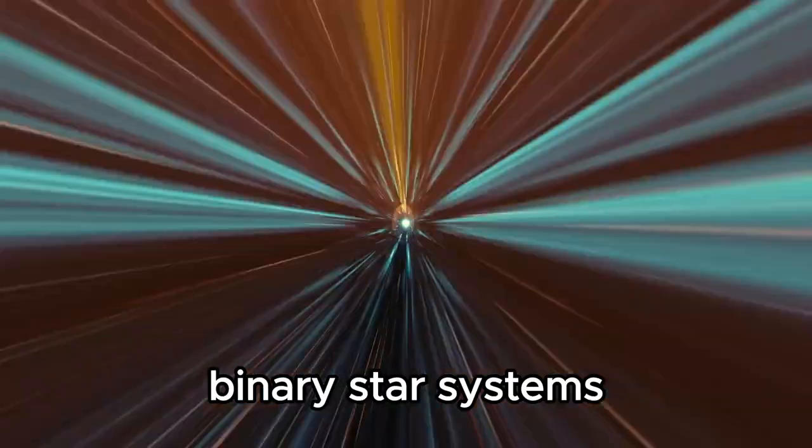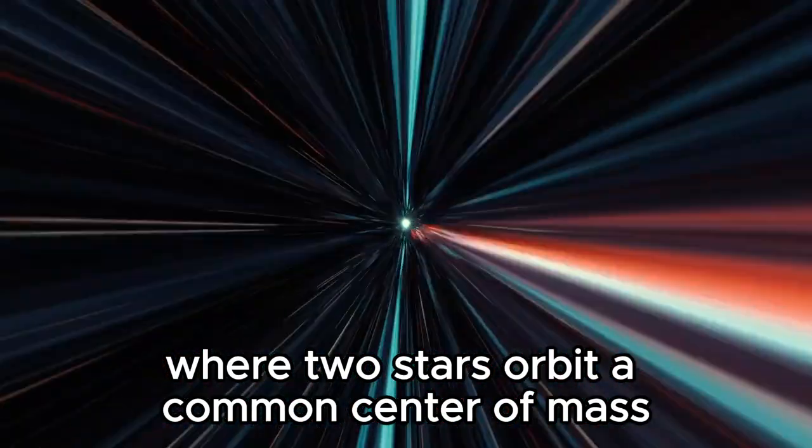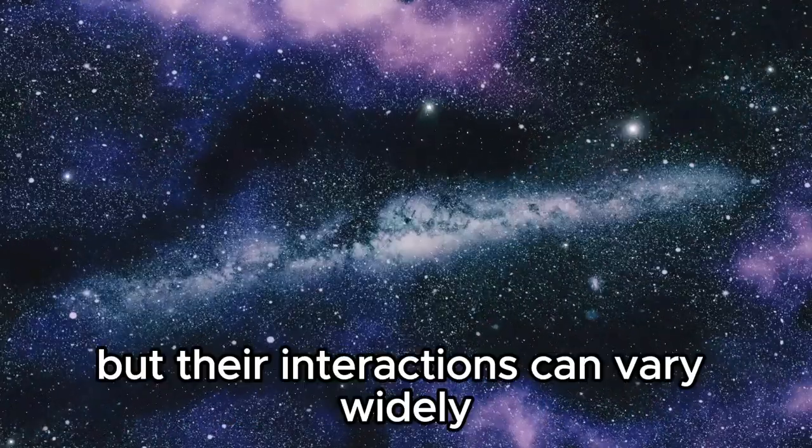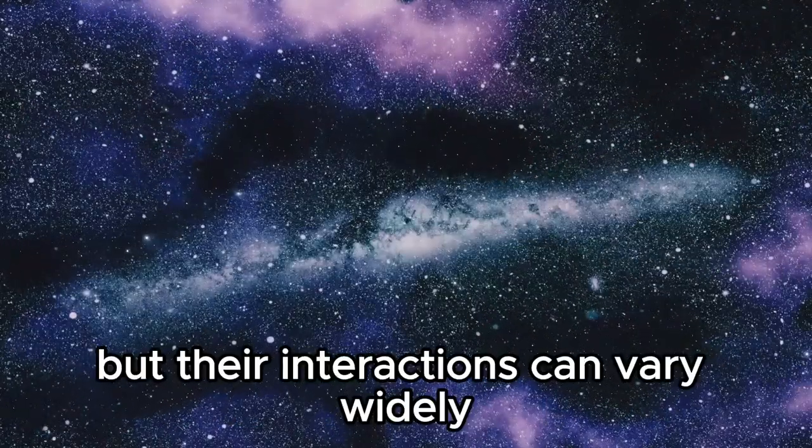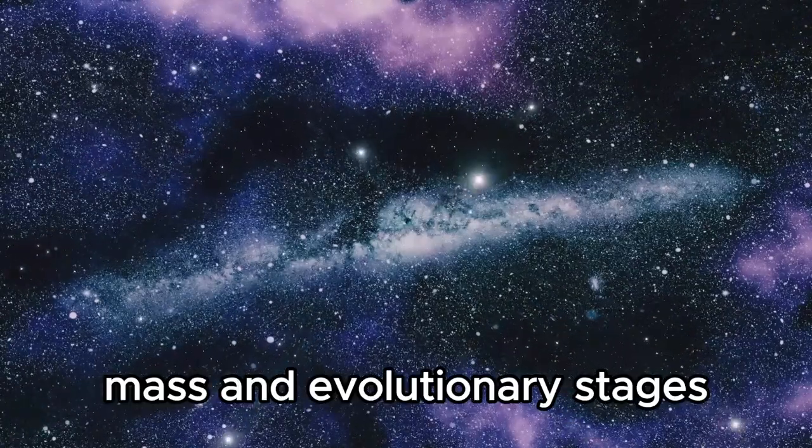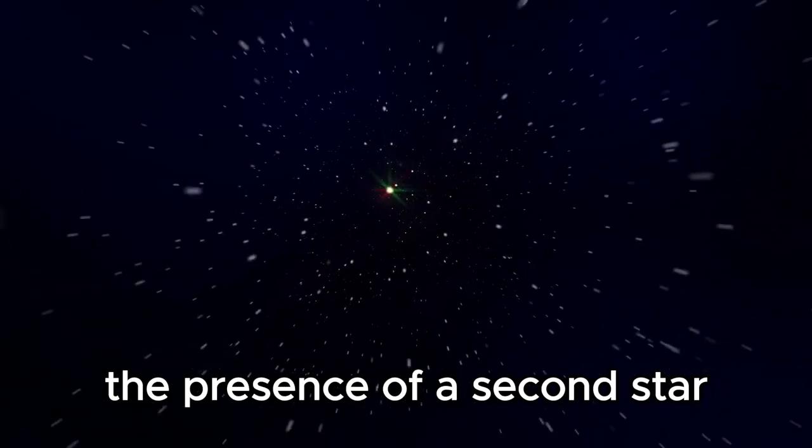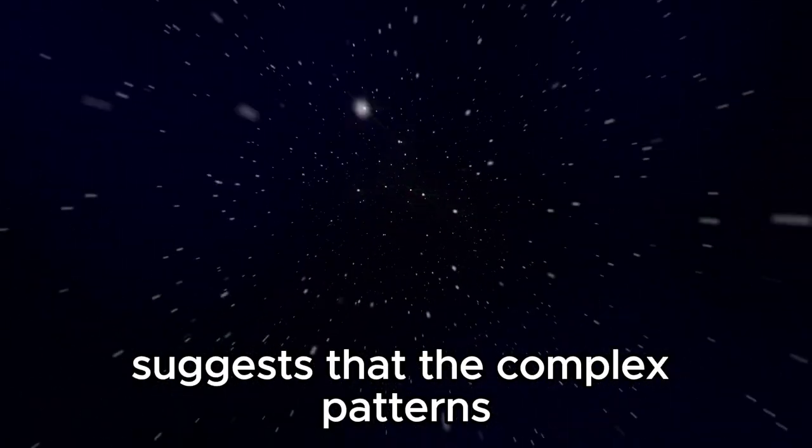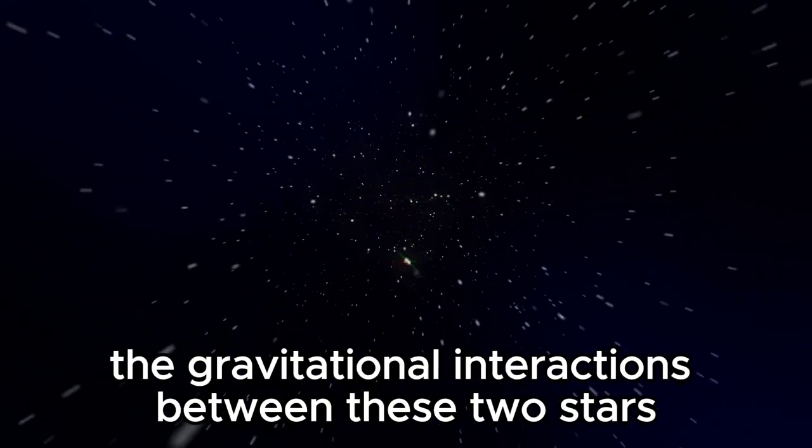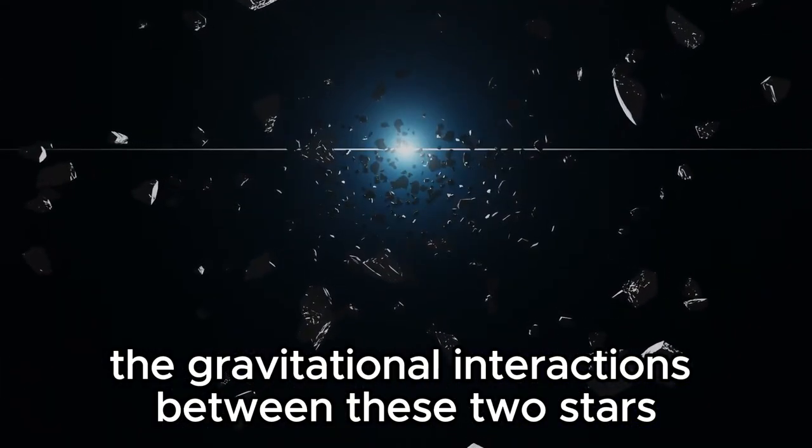Binary star systems, where two stars orbit a common center of mass, are relatively common in the universe, but their interactions can vary widely depending on their proximity, mass, and evolutionary stages. In the case of the Southern Ring Nebula, the presence of a second star suggests that the complex patterns observed in the nebula structure may result from the gravitational interactions between these two stars.